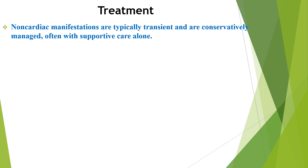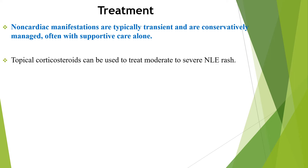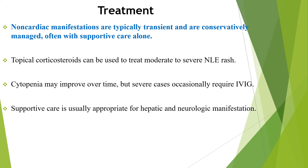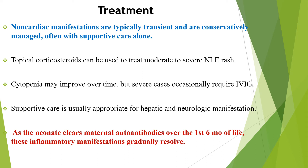Regarding treatment, non-cardiac manifestations are typically transient and are conservatively managed, often with supportive care alone. Topical corticosteroids can be used to treat moderate to severe neonatal lupus rash. Cytopenia may improve over time, but severe cases may require IVIG. Supportive care is usually appropriate for hepatic and neurologic manifestations. As the neonate clears maternal autoantibodies over the first 6 months of life, these inflammatory manifestations gradually resolve.